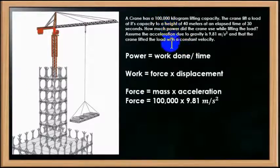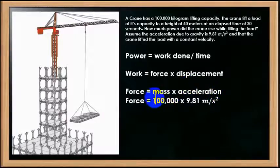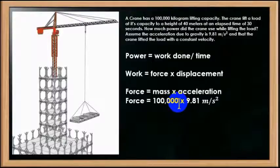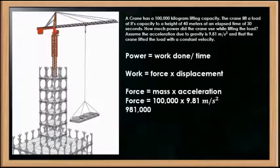If you look at the question, force equals mass times acceleration. So in order to constantly lift the 100,000 kg load we are going to have to lift it at a constant velocity, and so we are going to have to overcome gravity which is 9.81 m/s². We will multiply that and we will come up with a number of 981,000. So we have that worked out. We have our force worked out.